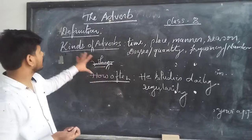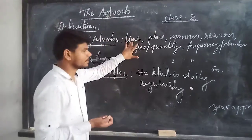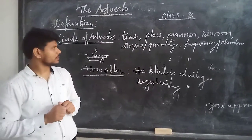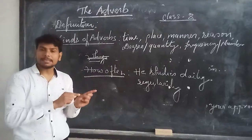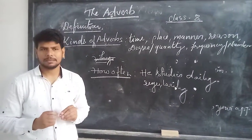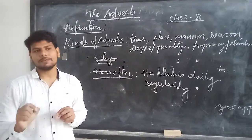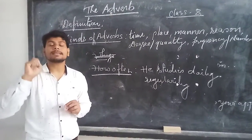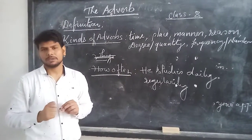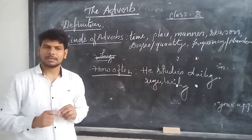Students, we talked about the kinds of adverbs: adverb of time, adverb of place, adverb of manner, adverb of reason, adverb of quantity and degree, and adverb of frequency and number. I hope and believe that this video will give you certain ideas on how to use adverbs in your sentences. Hope this video will be useful to you. Thank you very much.